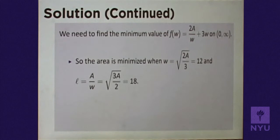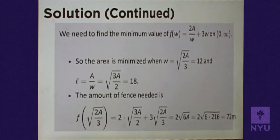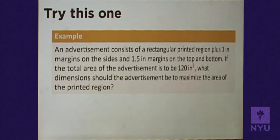With A = 216, the optimal width W = √(2·216/3) = 12 meters, and the length L = 216/12 = 18 meters. The total fence needed is 2·18 + 3·12 = 72 meters. We followed the same process: identified the function to find the extreme value for, then used a derivative test to find that extreme value.